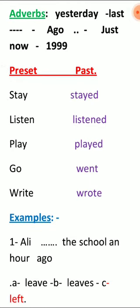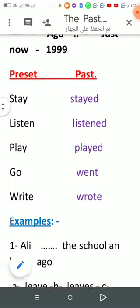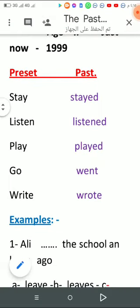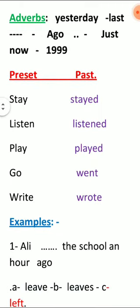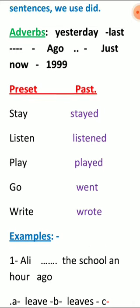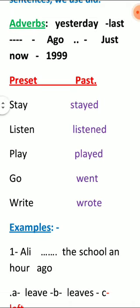الأفعال عندها ثلاث categories: عندنا الـ present والـ past والـ past participle. لكن في هذا اليوم هنركز على الـ present والـ past فقط.